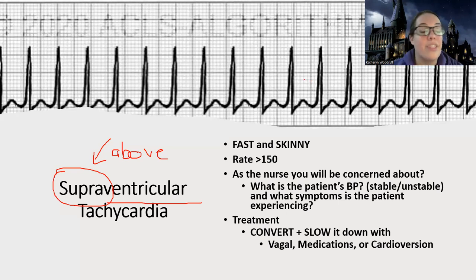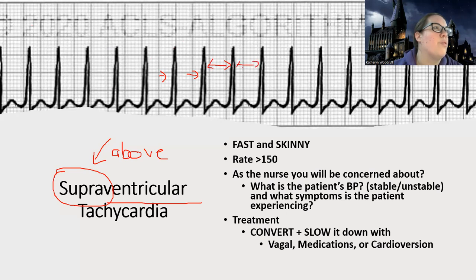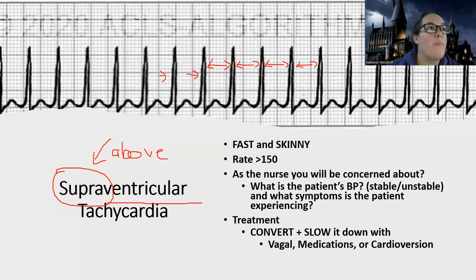You're going to notice things that make it look like a top-of-the-heart problem. Look at the QRS complexes — they're skinny. We've got skinny QRSs and a regular rhythm. There's the same amount of space between each complex. It's beautiful, like the ants go marching — just a beautiful back-to-back-to-back rhythm. But the one thing I'm noting is: where are my P waves? These things here are my T waves, but where are my P waves?